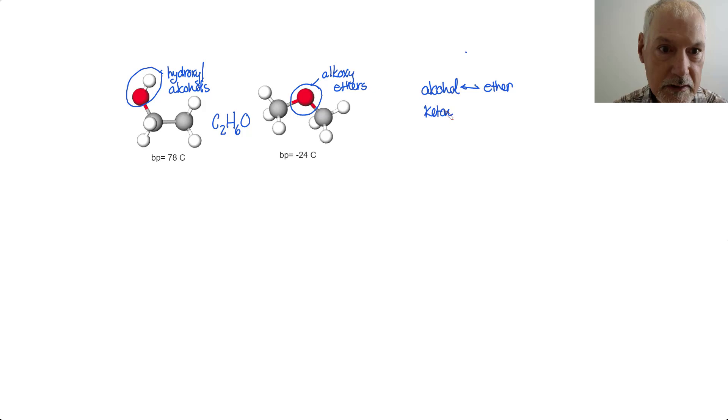Our ketones can be converted to isomers that are aldehydes. And lastly, carboxylic acids, they can be converted to a corresponding ester. So, here we have functional groups and their corresponding classes that could be interconverted into various isomers.